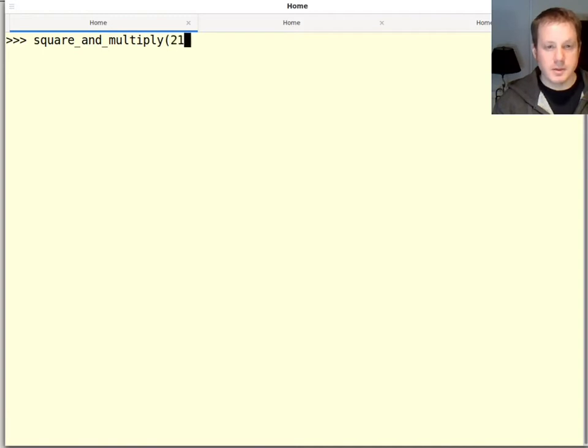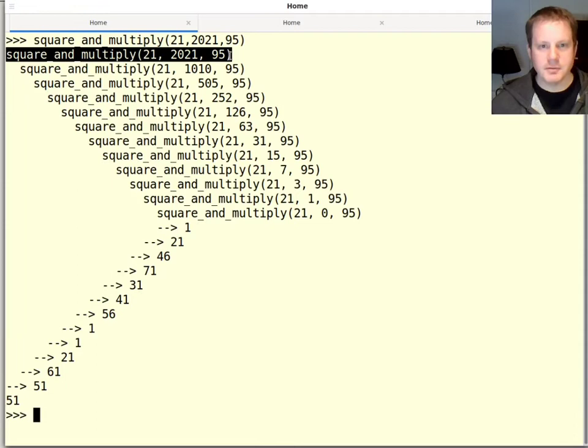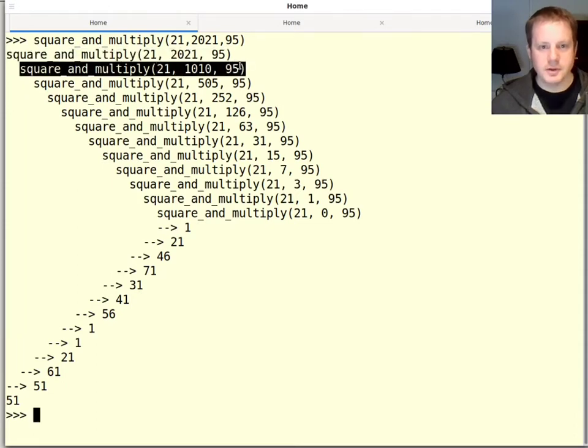So we want to say 21 to the power of 2021, mod 95. And I added a thing so it'll trace out these recursive calls. So what we're seeing is this is the top level recursive call. That in turn calls 21 to the 1010, mod 95. What's that going to do? Call 21 to the 505, mod 95, et cetera, et cetera.